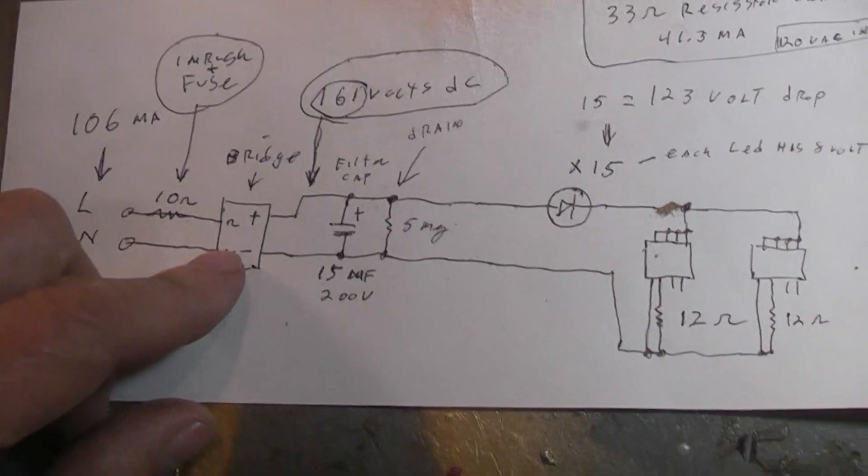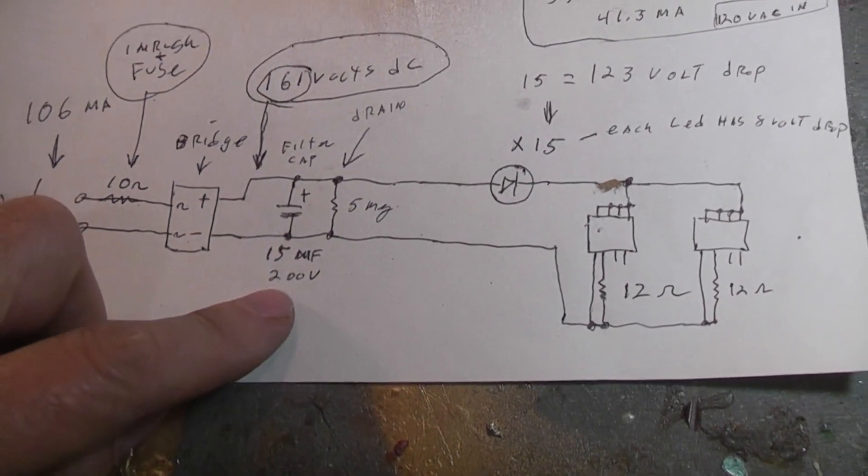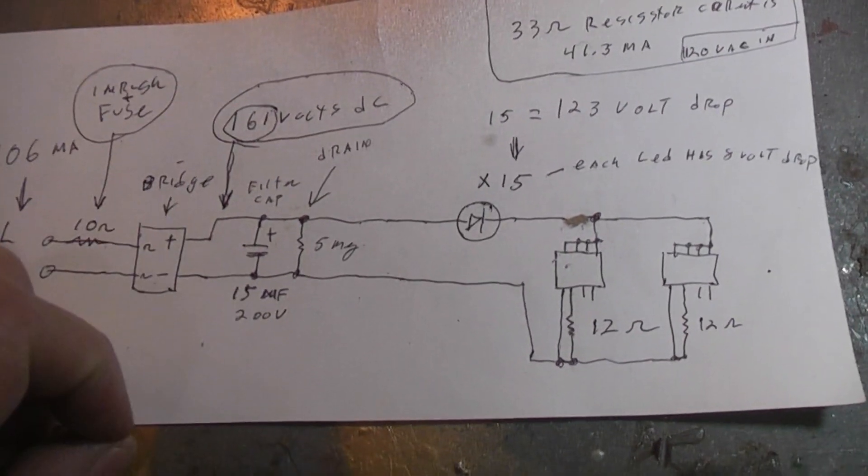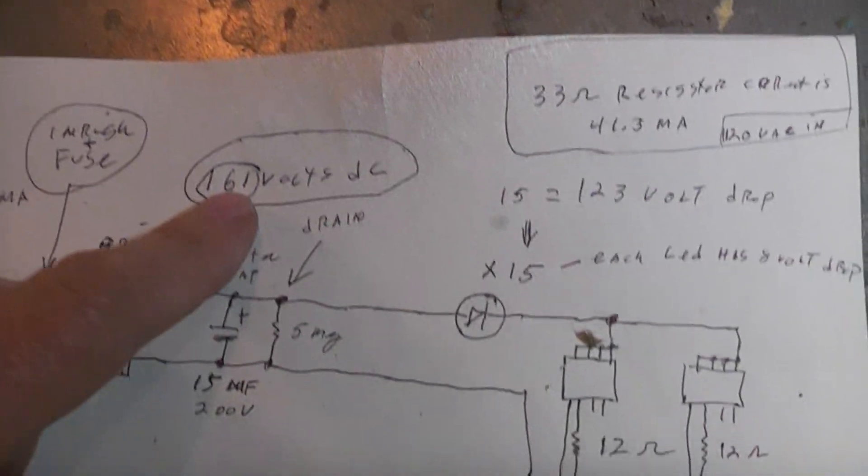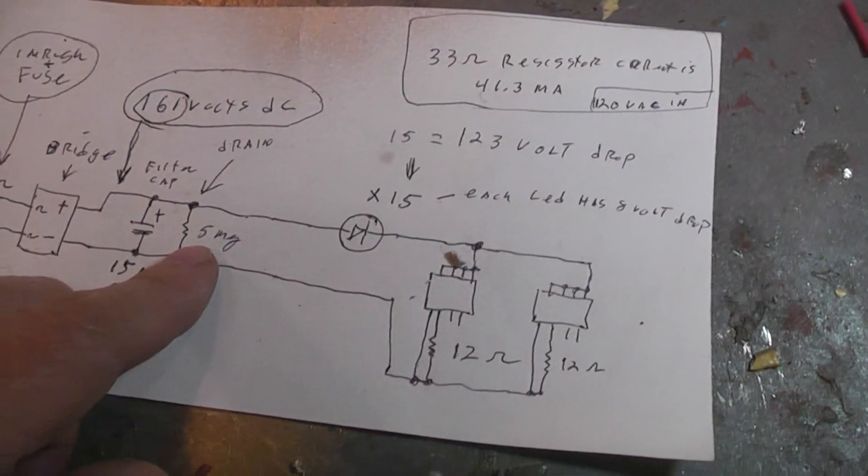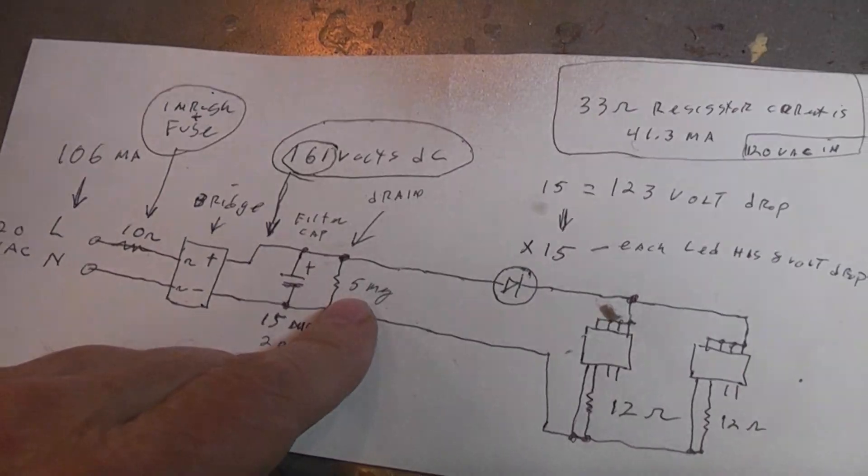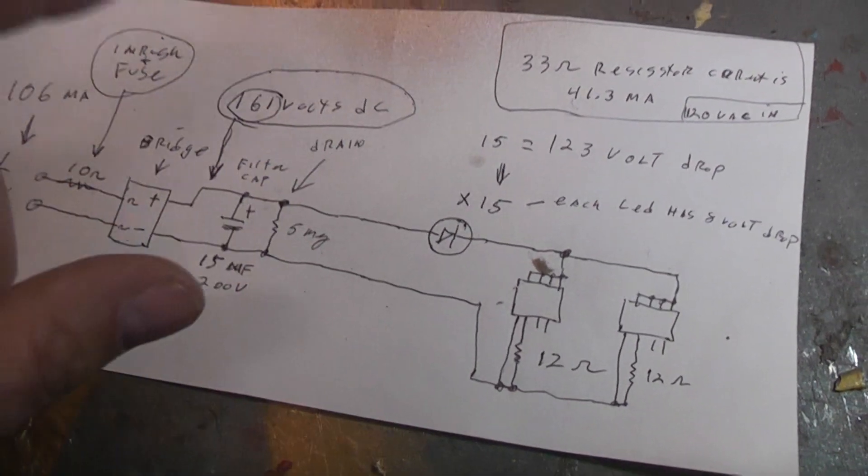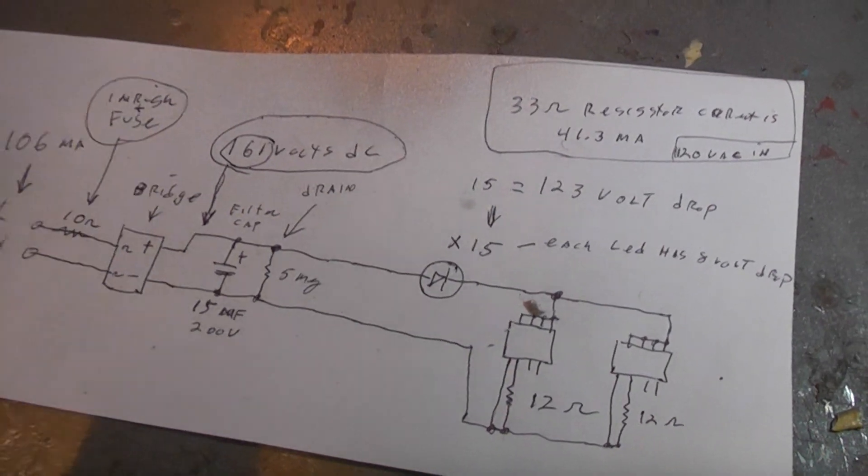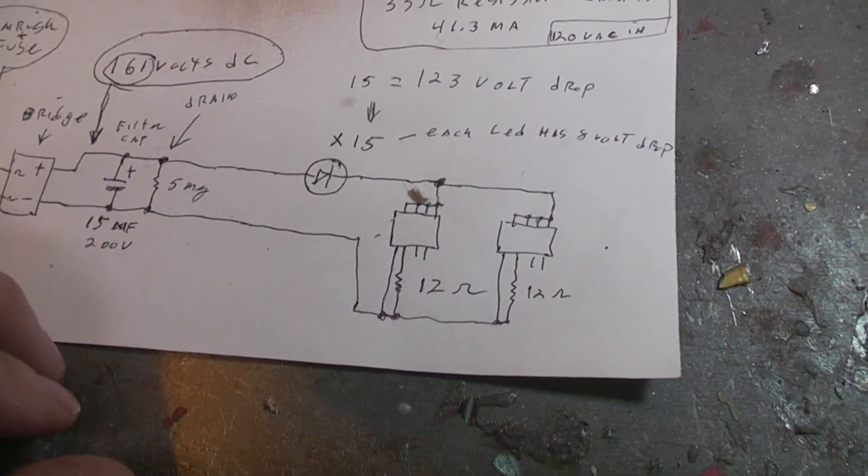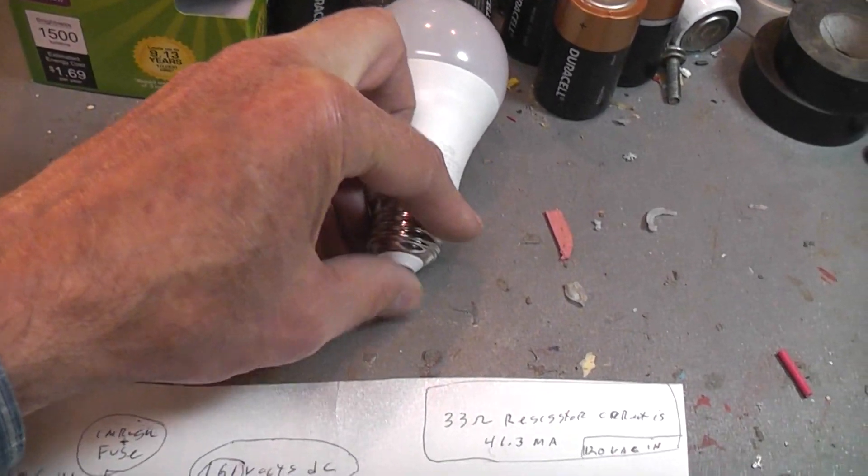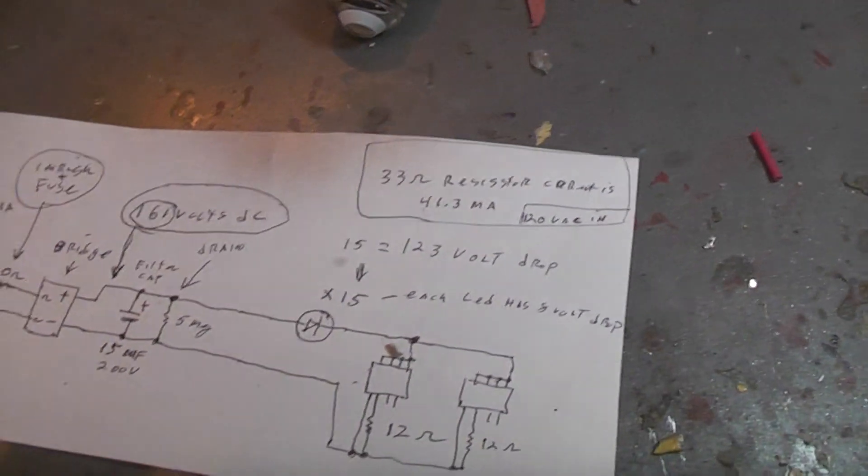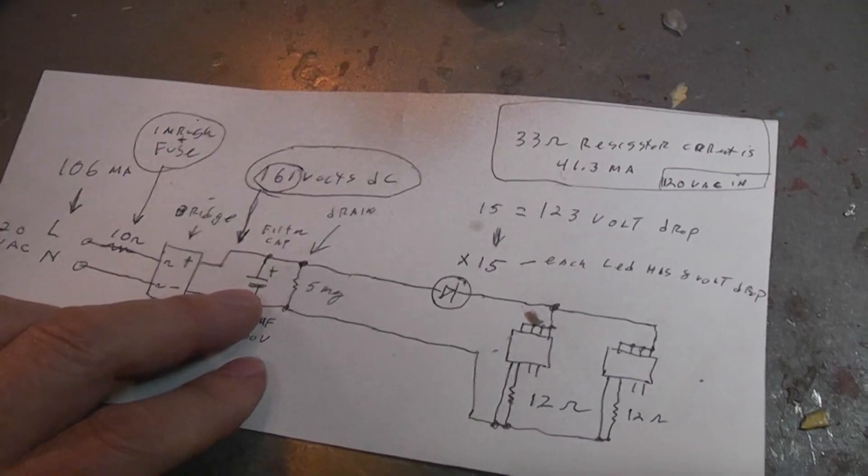On the outside of the bridge they run to a filter cap, 15 NF at 200 volts, which filters out, giving you about 161 volts DC from the 120 in. They do have a drain resistor on there so when you turn the switch off, this little cap will be drained down so you don't get the ghosting of the LED faintly glowing. Or if you were to grab the two ends of these prongs and the screw in, you're not going to get a 160 volt shock because that cap will be drained down.